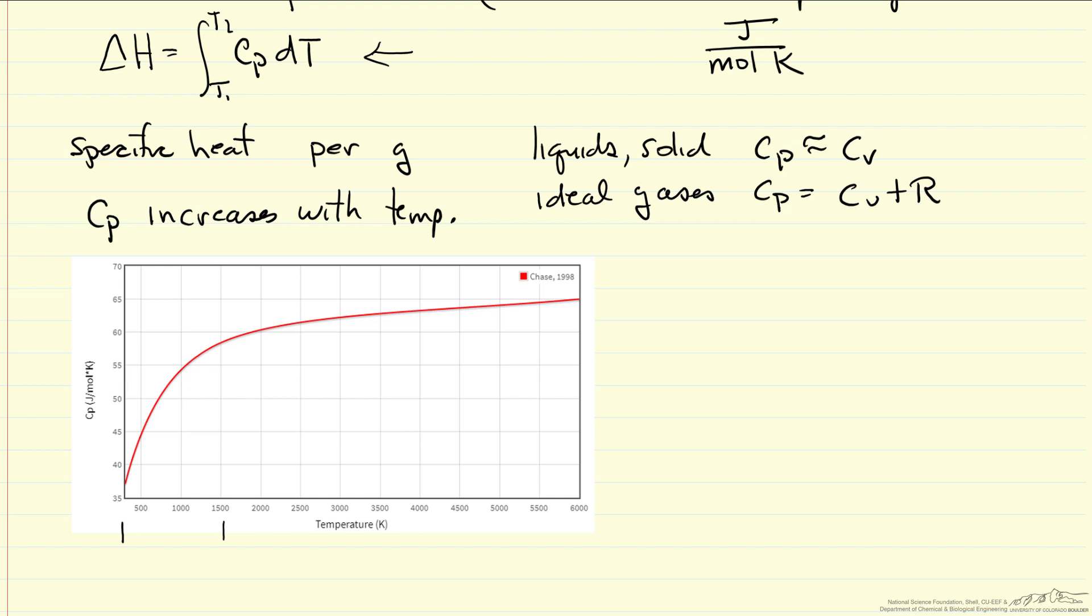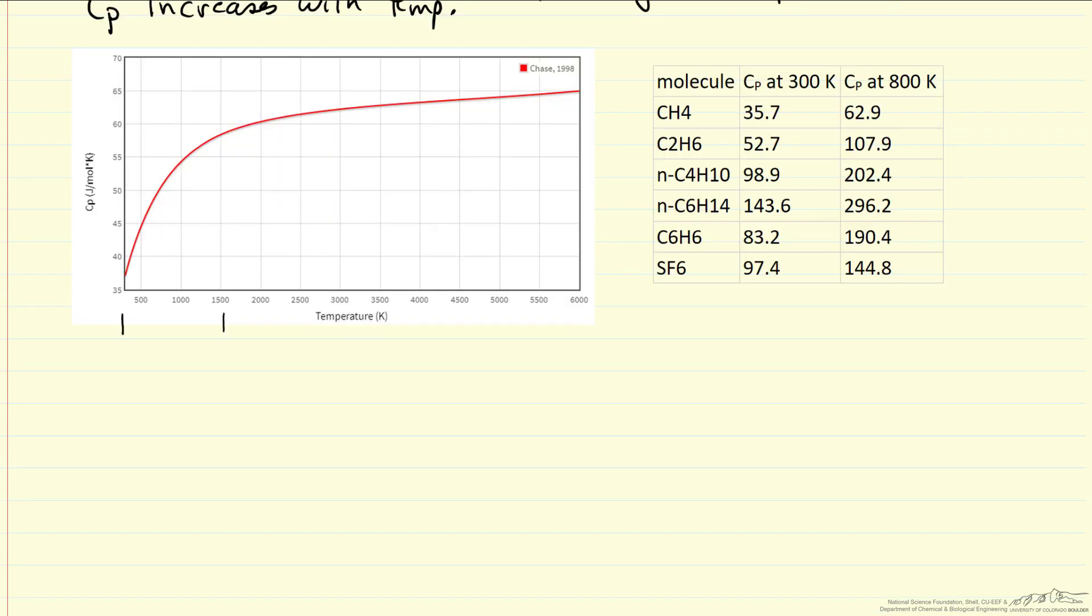Heat capacity also, its magnitude varies a lot between molecules. I'll just look at a few examples. First, notice how heat capacity, for example for ethane, doubles between 300 and 800 Kelvin. Also notice that C6 heat capacity is significantly higher than ethane. But C6 benzene, so it depends very much on the molecule, not just on the molecular weight, as to how large the heat capacity is.